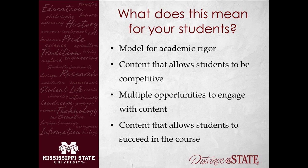Here's what that means for your students. First, it provides an actual working model of academic rigor — if we're going to ask a student to cite something, we better be citing it too, to show them how it's done. When we update our content, we're allowing our students to be competitive, because you can't be competitive in a job market with old information. We have to have our students engage with content in different ways, giving them as many chances as feasible. And we want content that allows students to actually succeed in the course — making sure that what we teach is what we assess.